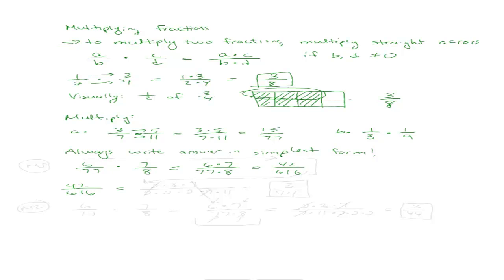To simplify, I'll find the prime factors of forty-two, which are two times three times seven. The prime factors of six hundred and sixteen are two times two times two times seven times eleven. Then I cancel out factors that are the same in the top and bottom — the twos and the seven — and I end up with three over forty-four. This is Method 1: multiply all the way through, then simplify the final answer.